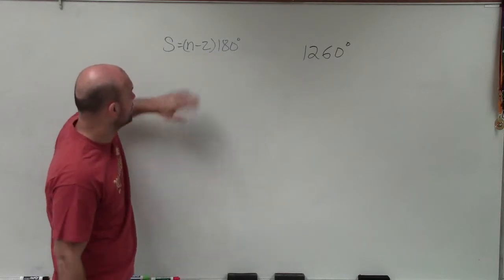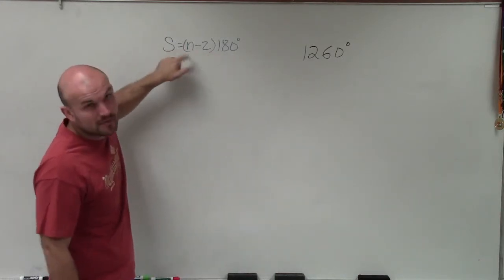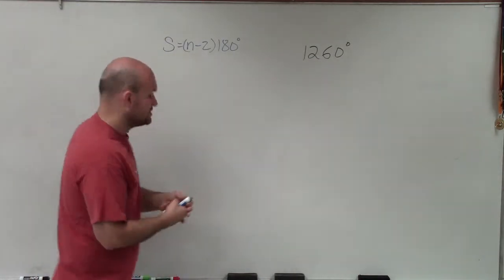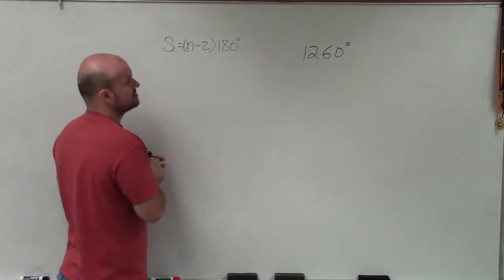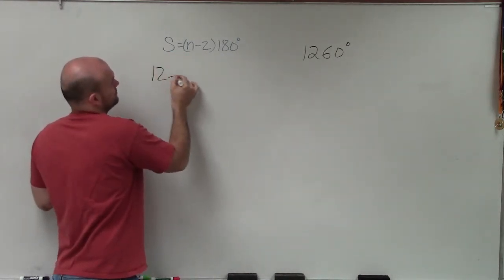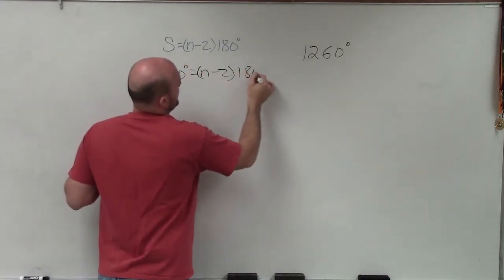So the formula for the sum of any polygon is going to be n minus 2 times 180, where n represents the number of sides, which we're trying to figure out. However, we do know what the sum is. So I'm going to plug in 1,260 in for s, because that represents the sum of a polygon, equals n minus 2 times 180 degrees.